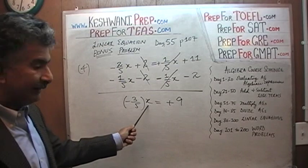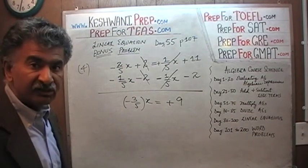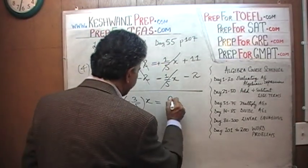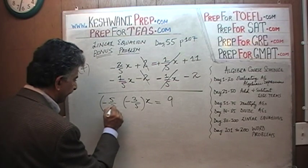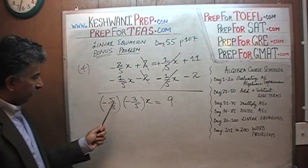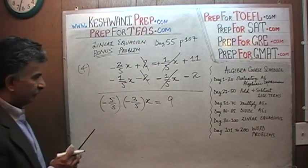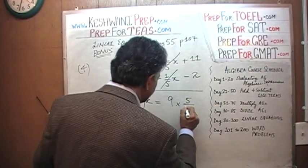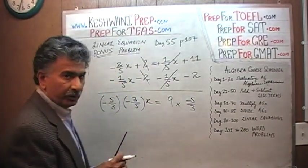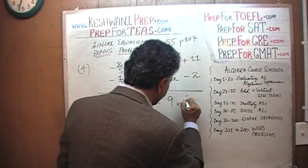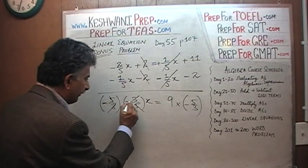Now we are interested in getting the x by itself. We are not interested in having this part. How do we get rid of this coefficient here? Very simple. Multiply both sides of the equation by the reciprocal of the coefficient. We don't need the sign here so I'm going to get rid of it. This is 9. Multiply both sides of the equation by the reciprocal of the coefficient. So it is negative 5 over 3. Negative times negative will become positive and this 5 will cancel out with that 5, this 3 will cancel out with that 3, leaving us with just x. Since we are multiplying this side of the equation by negative 5 over 3, we must do the same over here.